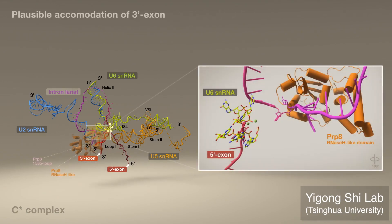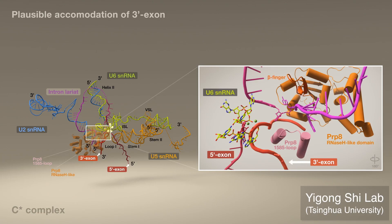The C-star complex reveals plausible accommodation of the 3' exon between the 5' exon and the 1585 loop, which appears to stabilize it, together with the beta hairpin, allowing the 3' splice site to enter the active site for the second catalytic step.